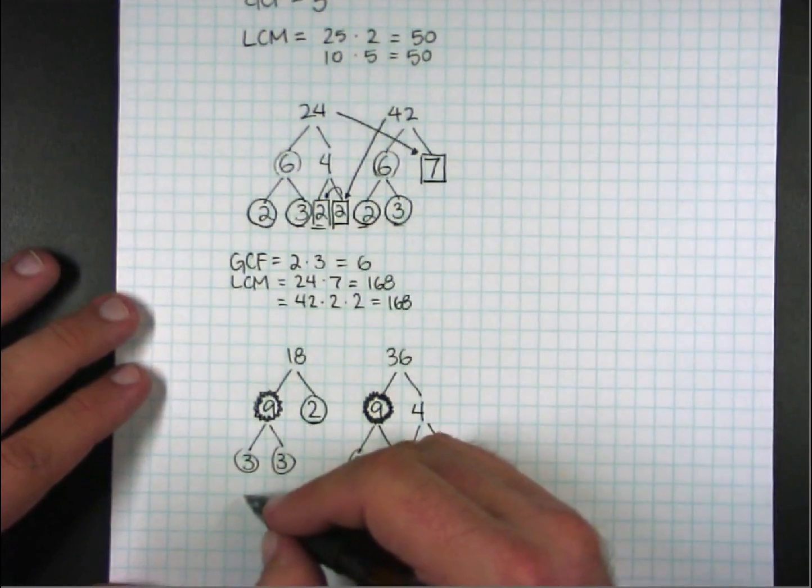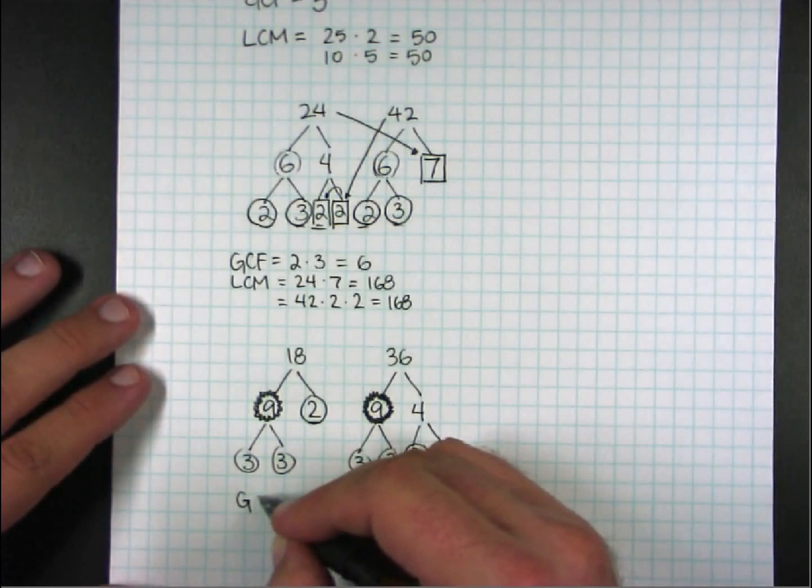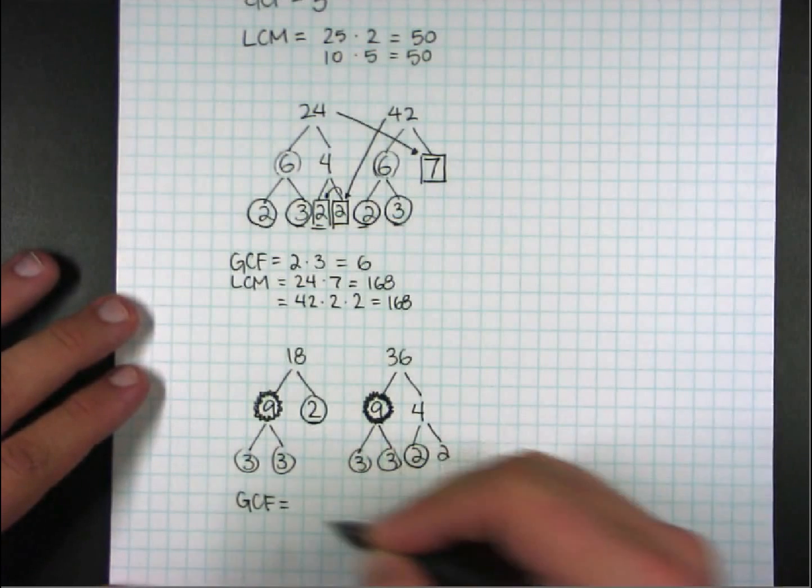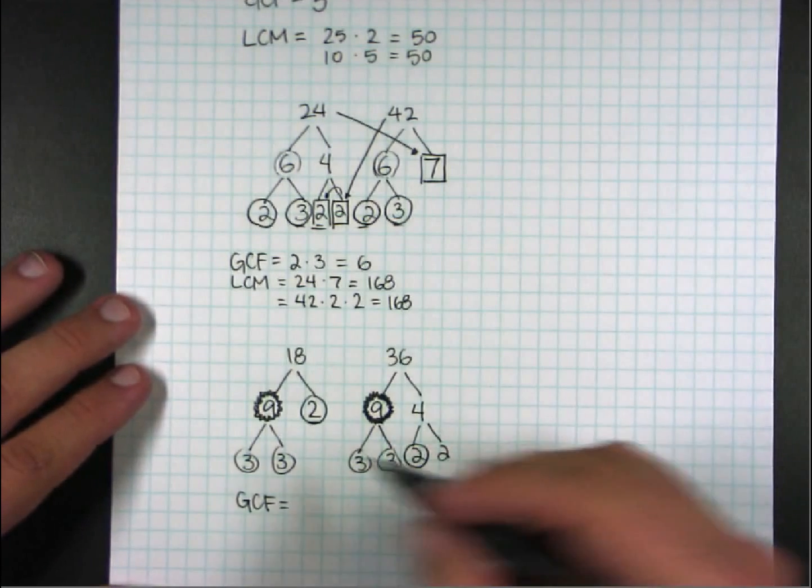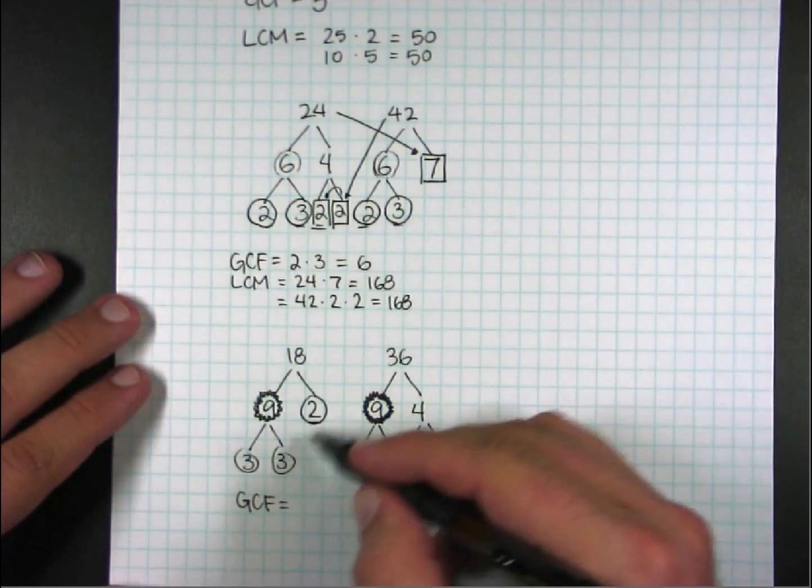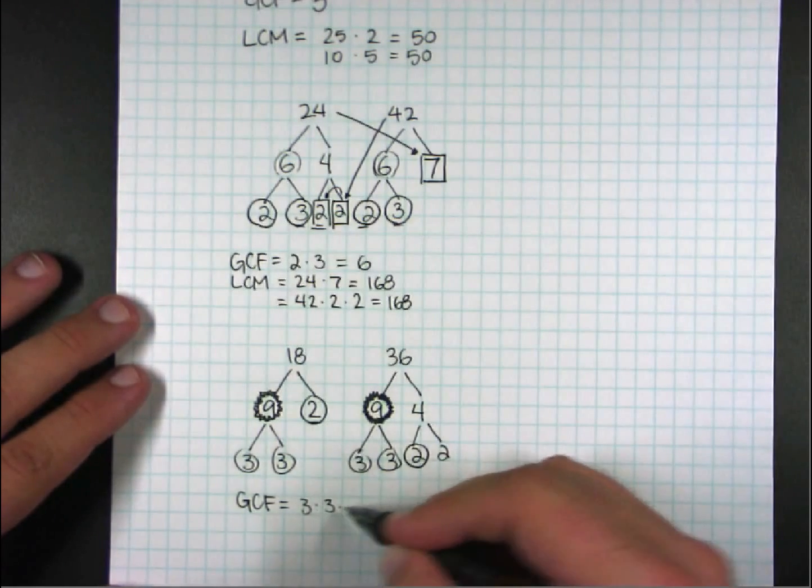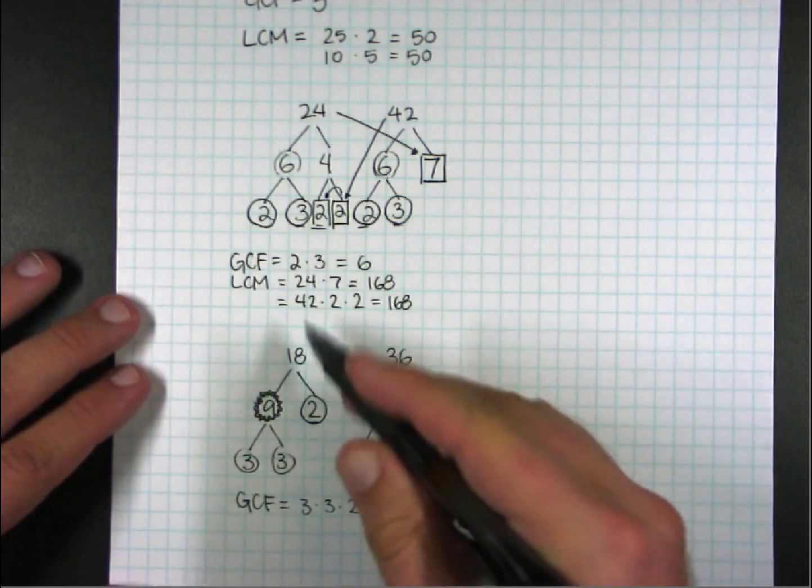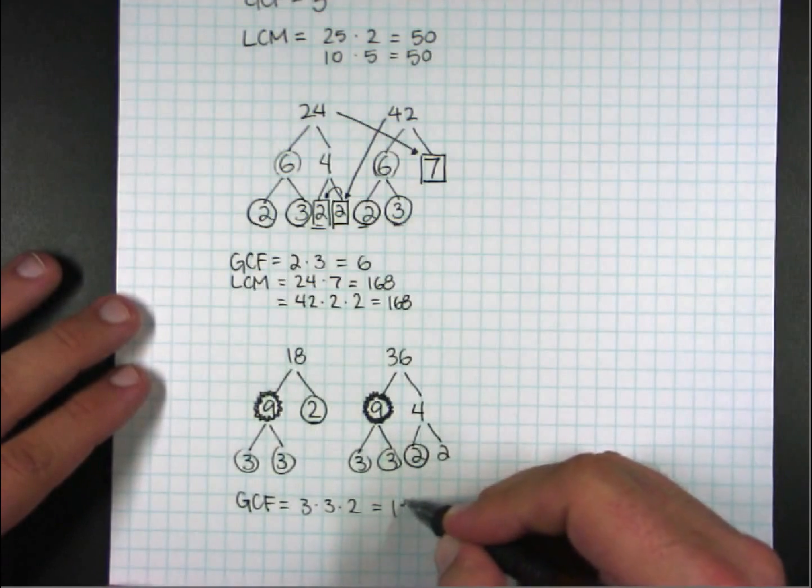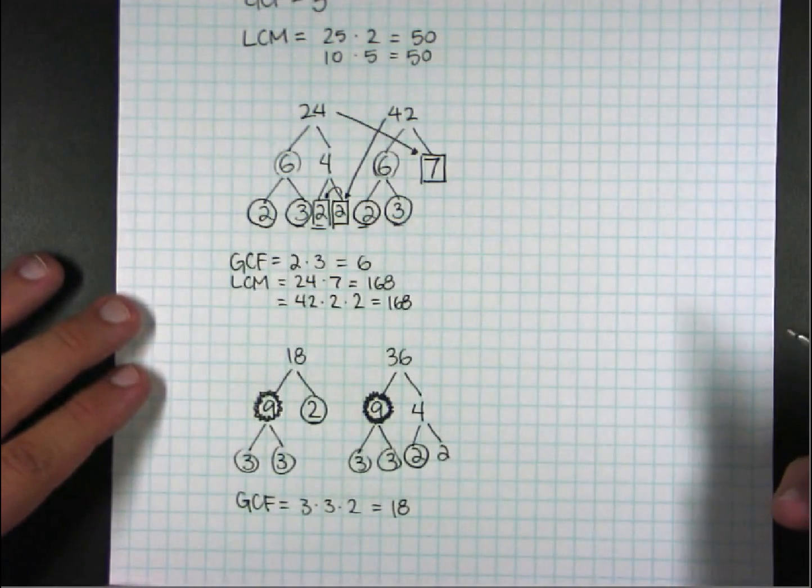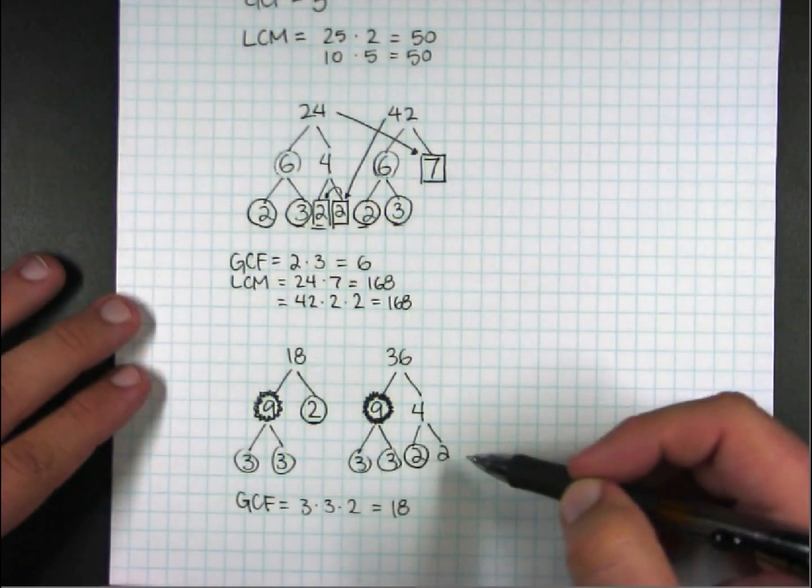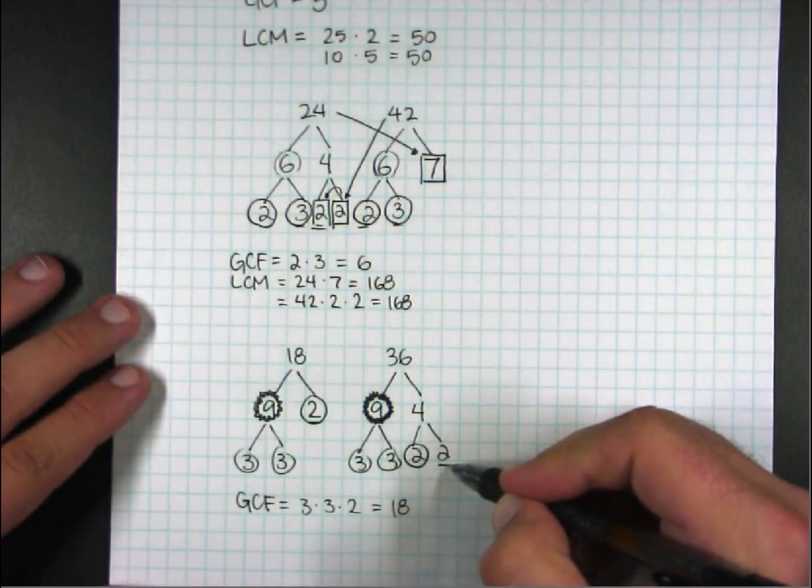So let's find, what is greatest common factor? The greatest common factor is going to be everything that's circled on one side multiplied together. 3 times 3 times 2. That's everything under 18. So it makes sense that my greatest common factor is 18. 18 times 2 is 36. That's why I had a 2 left over.